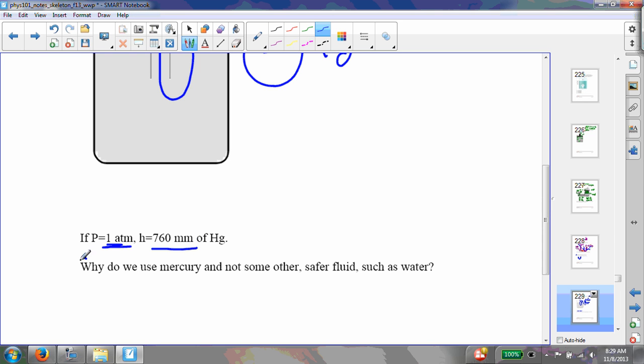But the question is, why do we use mercury and not some other safer fluid, such as water? Now you have a homework question, I believe, that deals with this. What if you had a barometer that instead of having mercury had water? Well, the pressure is equal to rho times G times H. And the reason that we use mercury instead of water is because of this dependence on density.